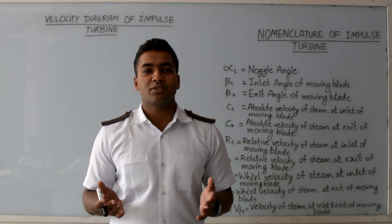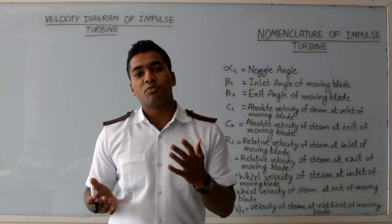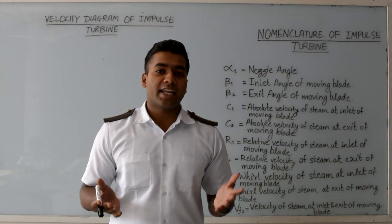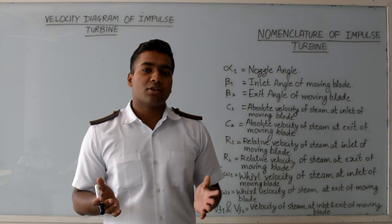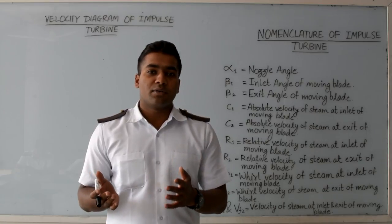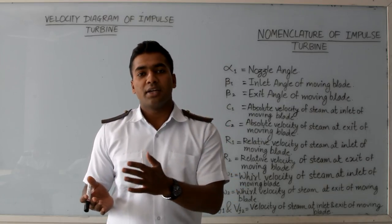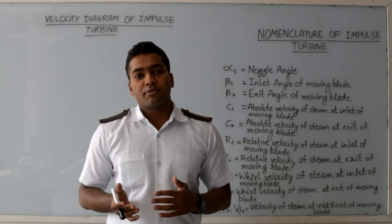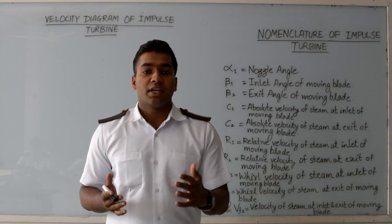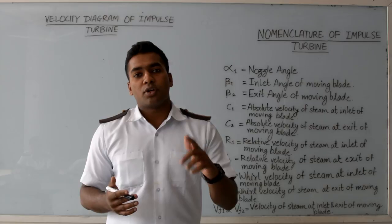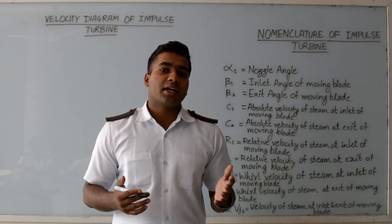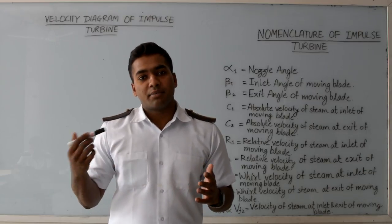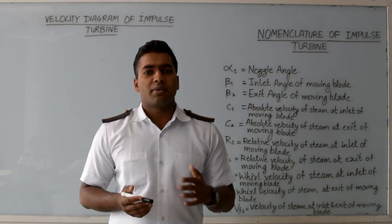A steam turbine consists of a nozzle and a ring of moving blades mounted on a shaft, and the shaft motion depends upon the dynamic action of steam. High-velocity steam enters the moving blades, causing a change in direction from inlet to outlet, which results in a change in momentum. This change in momentum creates a driving force and driving thrust, which rotates the turbine shaft.